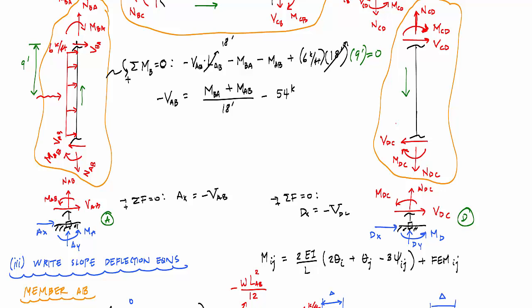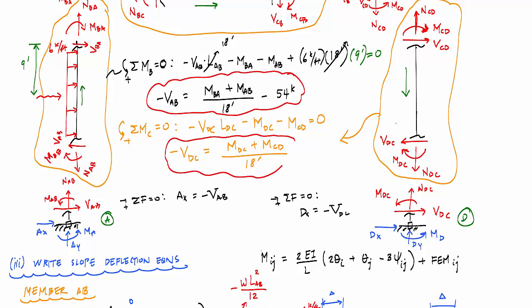If I do the same for member CD, I can also get the internal shear V_DC as a function of the moments. And so this I'll do in orange, I would get for sum of the moments about end C equal to zero. And this would tell me that negative V_DC is equal to... And now I just go back and take these two relationships and apply it back to that equilibrium equation.